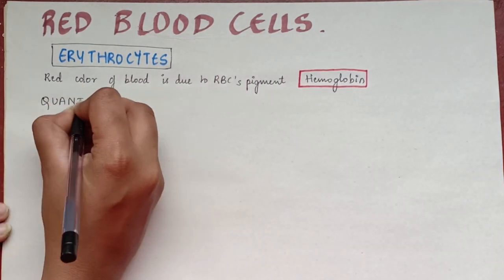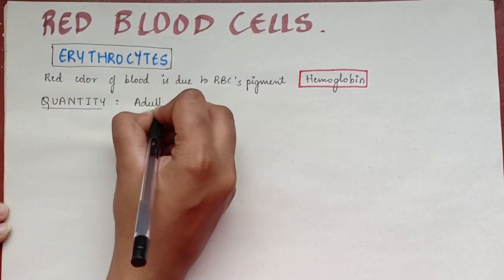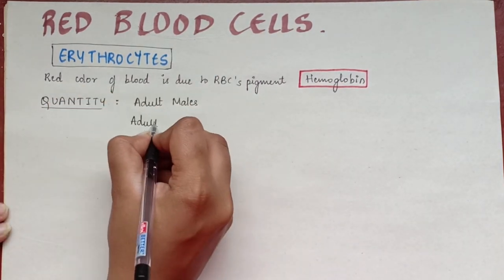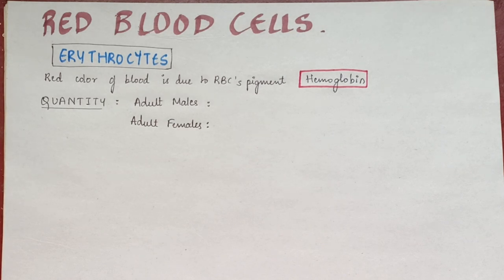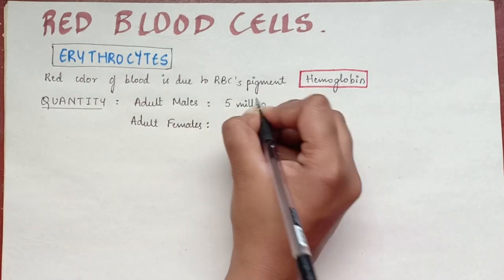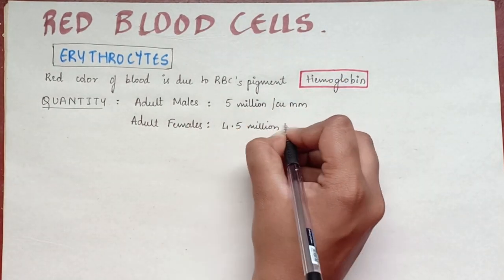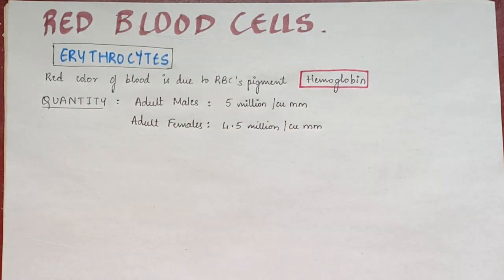Blood quantity: In adult males, the RBC count is 5 million per cubic millimeter, and in adult females, it is 4.5 million per cubic millimeter.